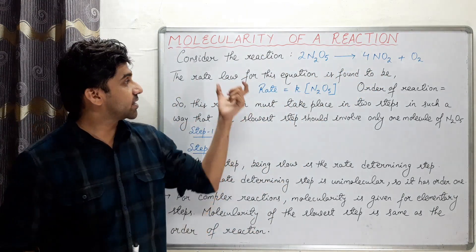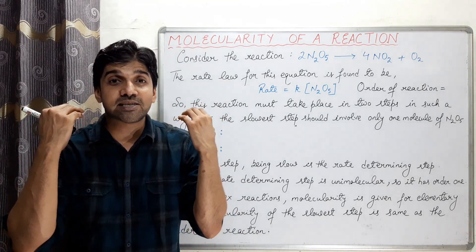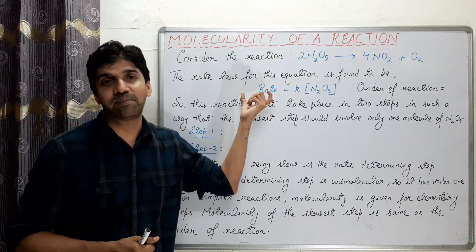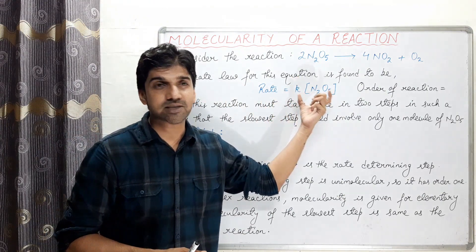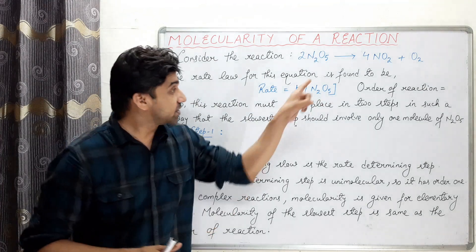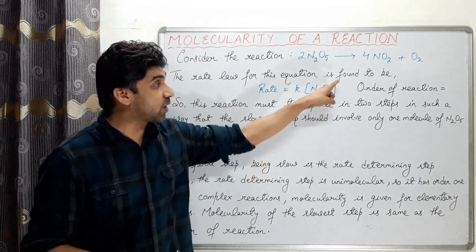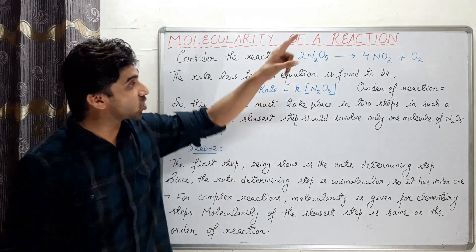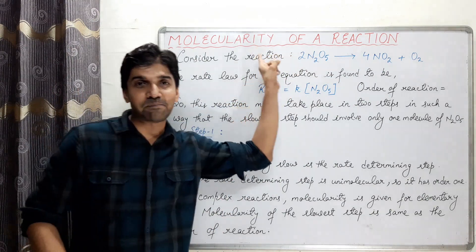For this reaction, the rate law is the expression in which the rate of chemical reaction is given in terms of molar concentration of the reactants. The rate is proportional to the concentration of N2O5 raised to a power exponent, which may or may not be the same as the stoichiometric coefficient of the reacting species in the balanced chemical equation.